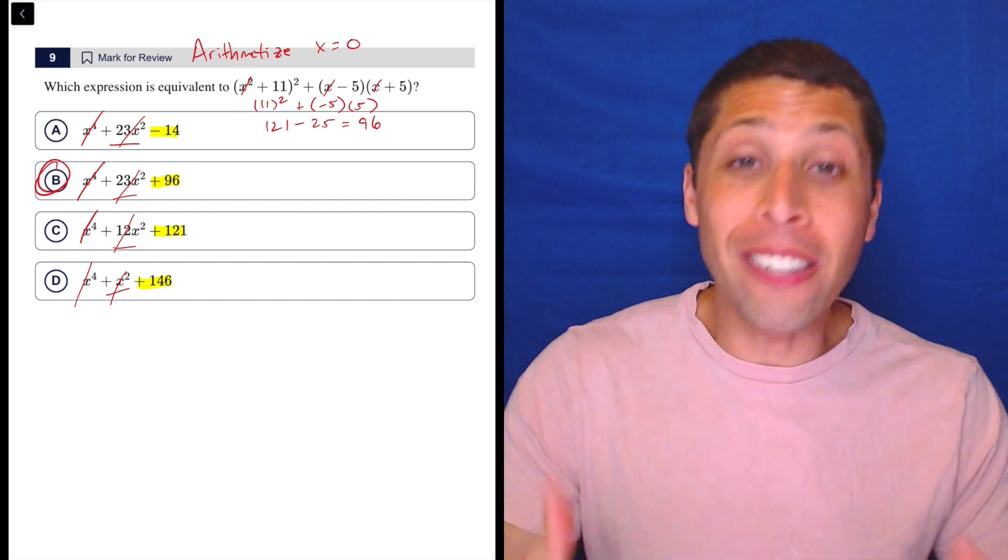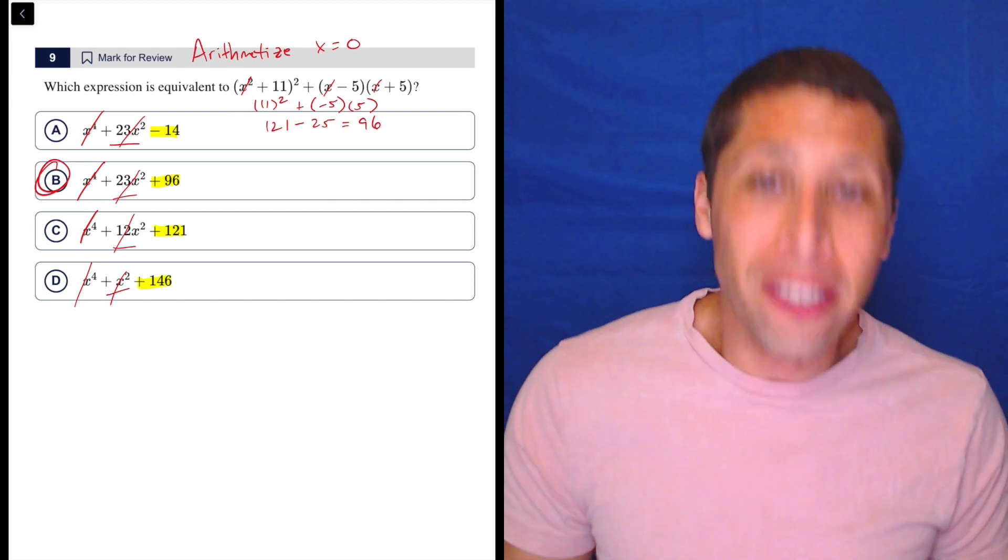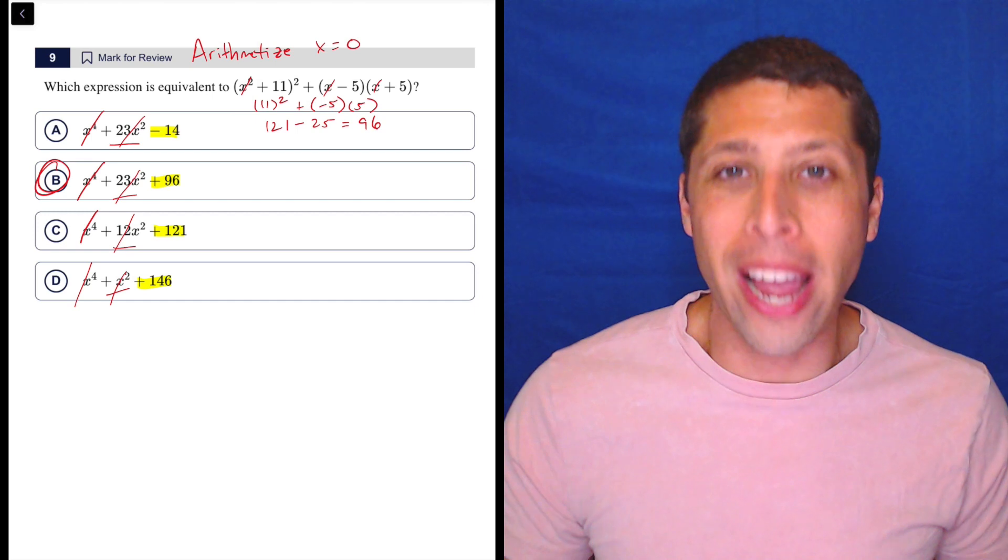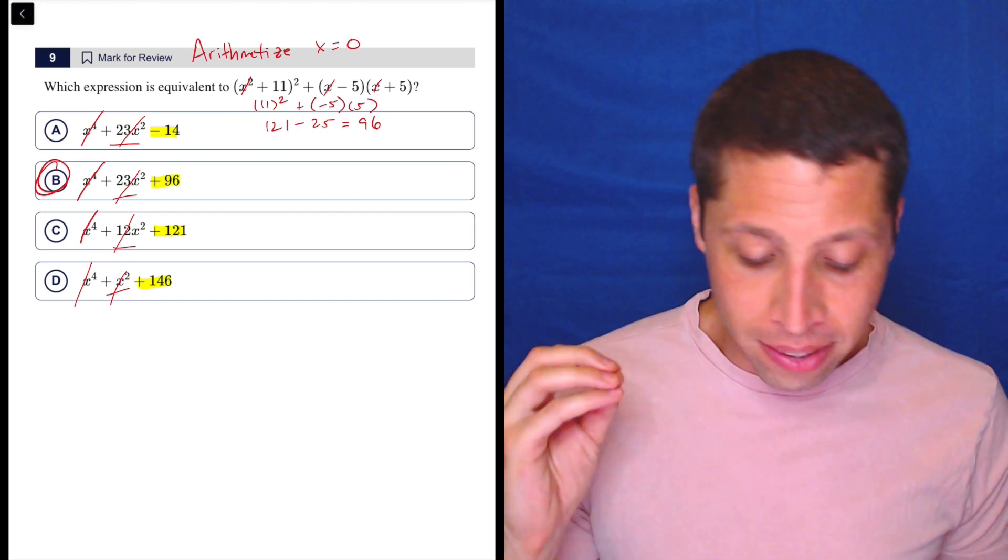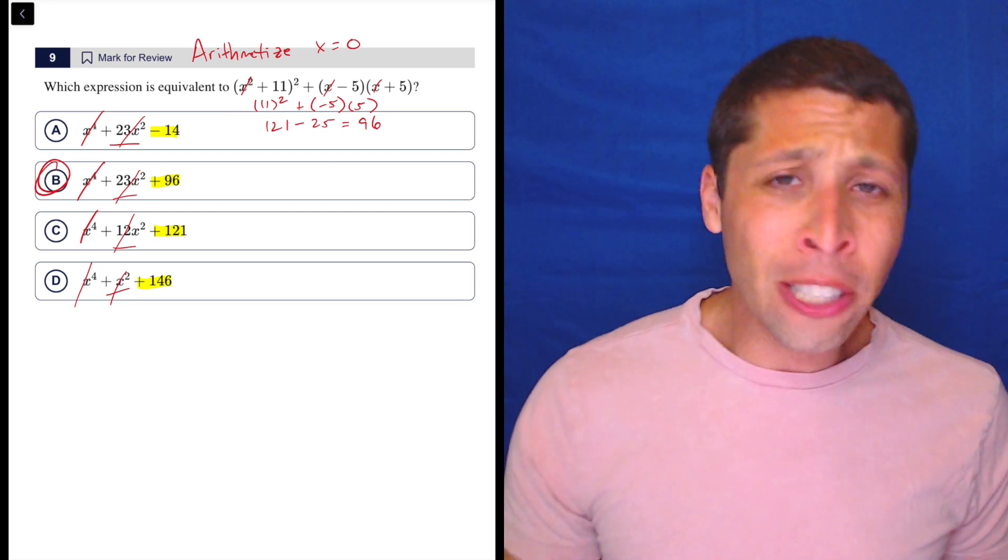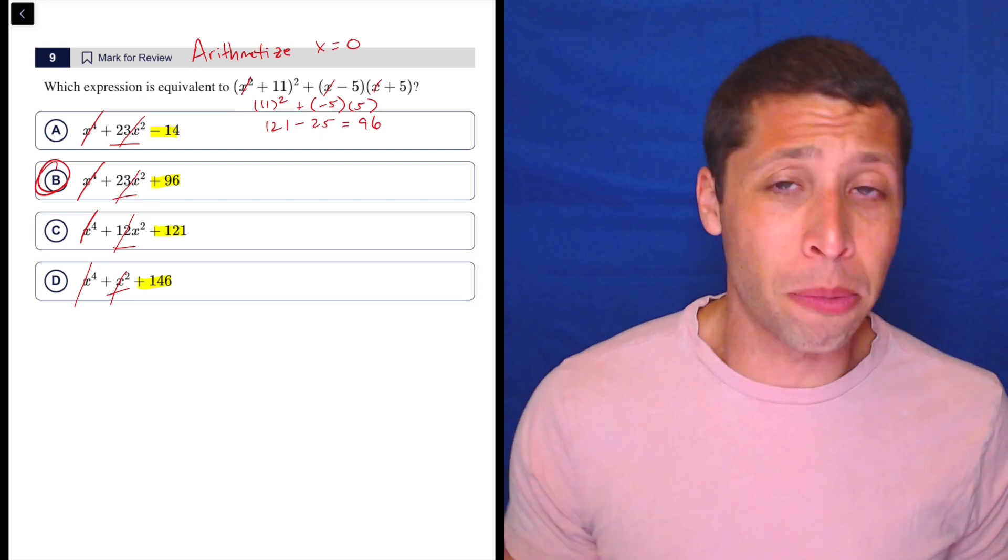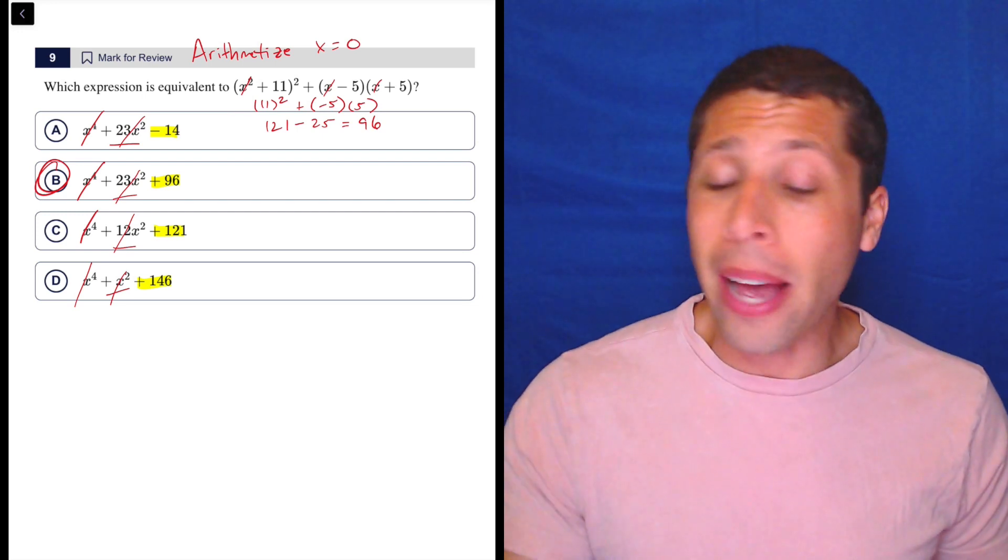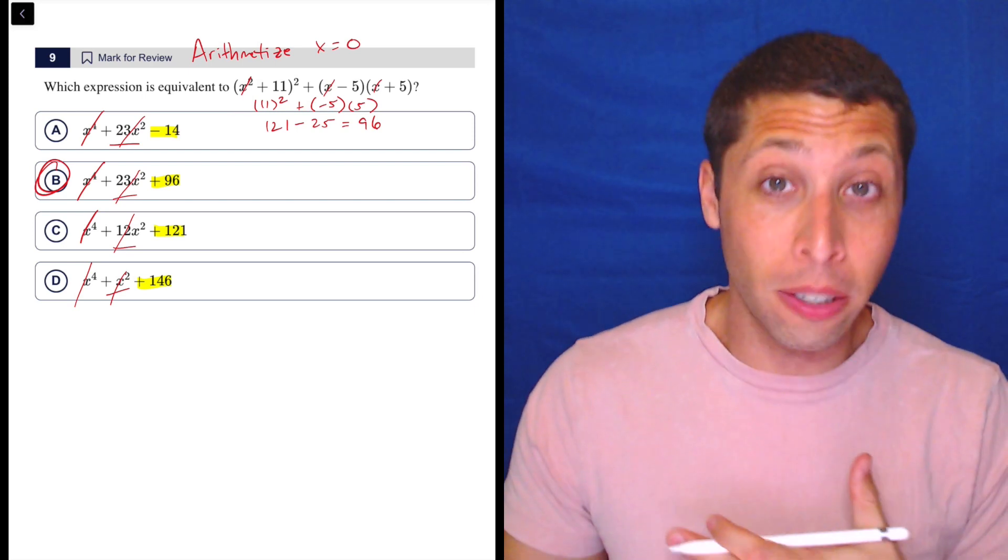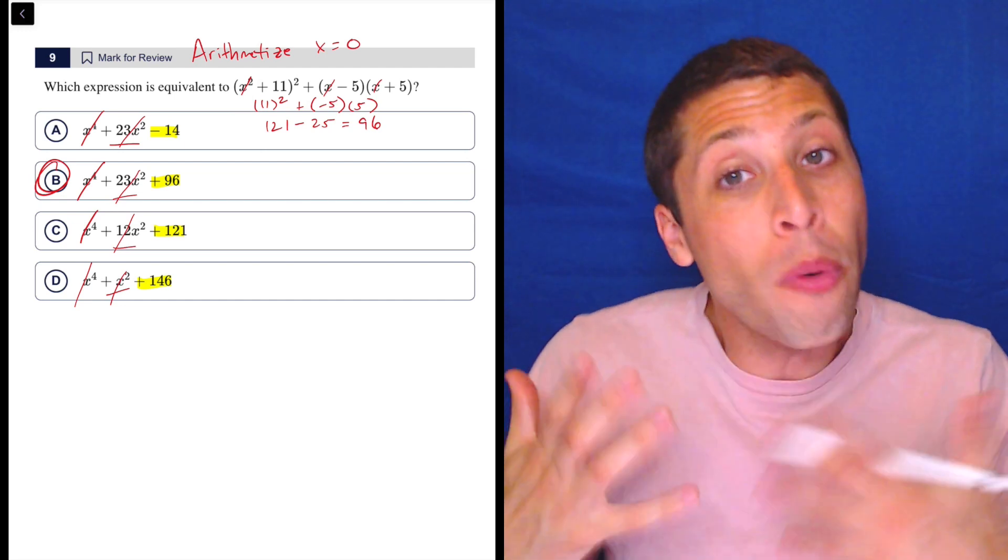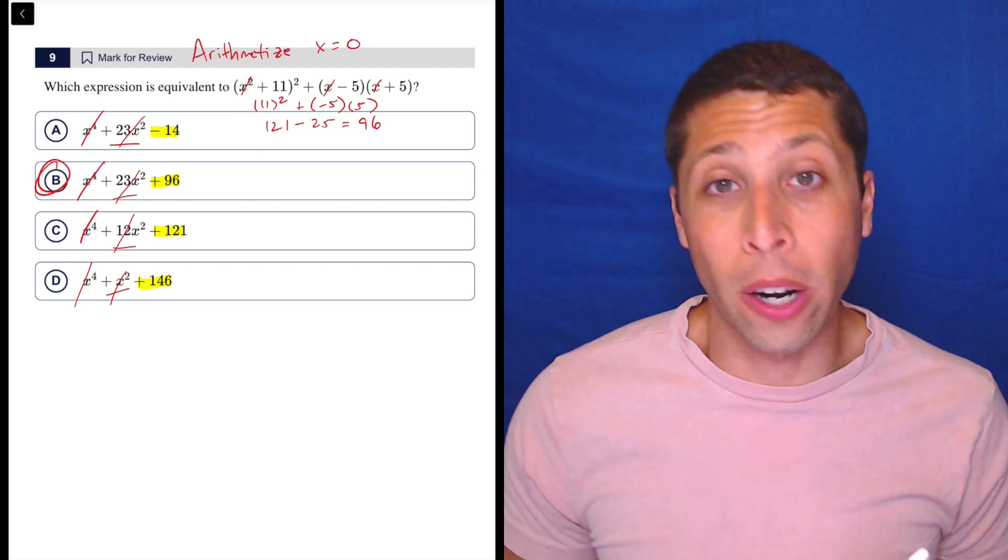And here it worked out so perfectly. Even if it didn't have this kind of sense that it was going to work out perfectly, I might've done it anyway and then worried about if it didn't and used a number like one to go from there, because this has got distribution, foiling, combining like terms, a lot of algebra here, easy to mess up. And I guarantee that if we do mess it up, one of these answer choices will kind of look like the right answer, and so we won't know that we messed it up. That's how the SAT works.